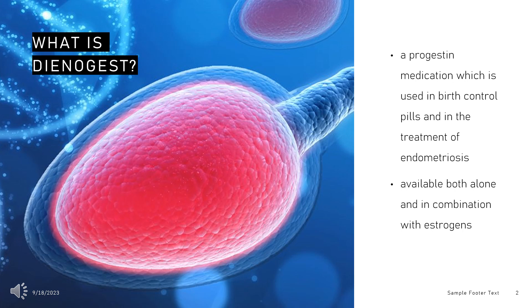Dienogest was discovered in 1979 and was introduced for medical use in 1995. Additional formulations were approved between 2007 and 2010. It is sometimes referred to as a fourth-generation progestin, and is marketed widely throughout the world as a generic medication.